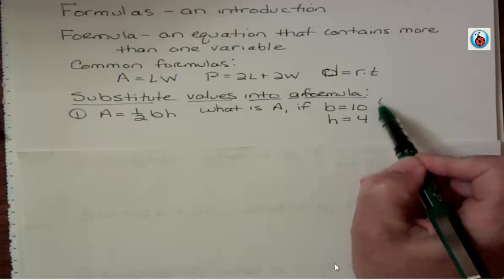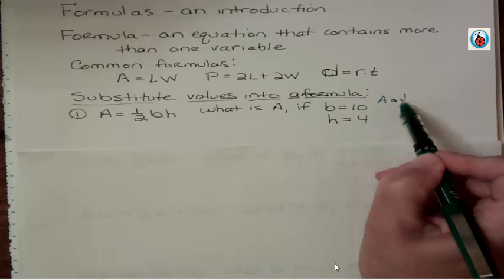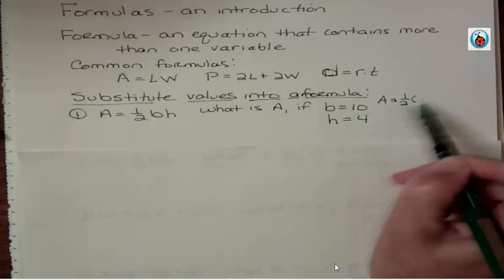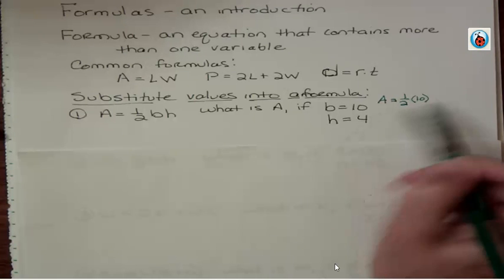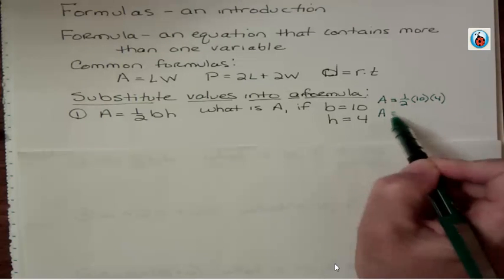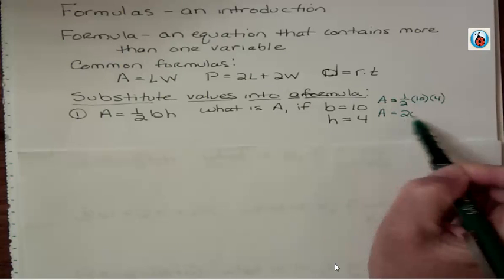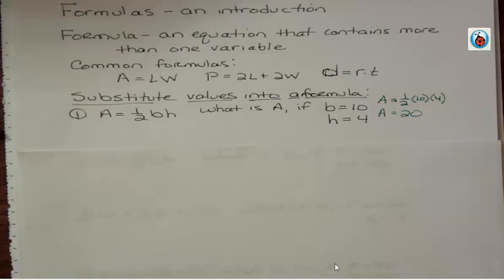We replace b and h with what we were given, then simplify to find A. So A = 1/2(10)(4). 10 times 4 is 40, and half of that is 20. So A = 20 when b = 10 and h = 4.